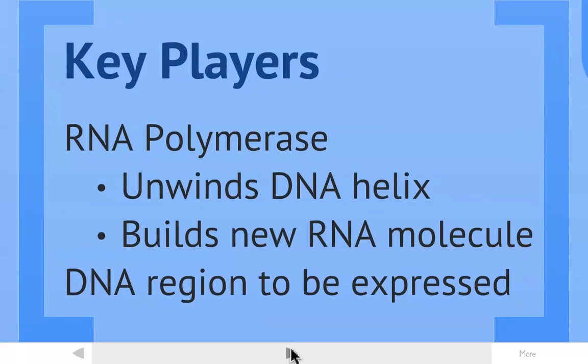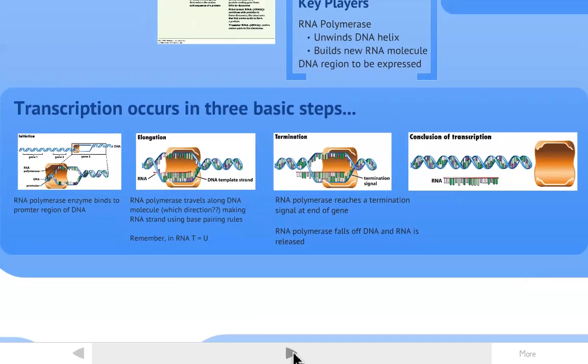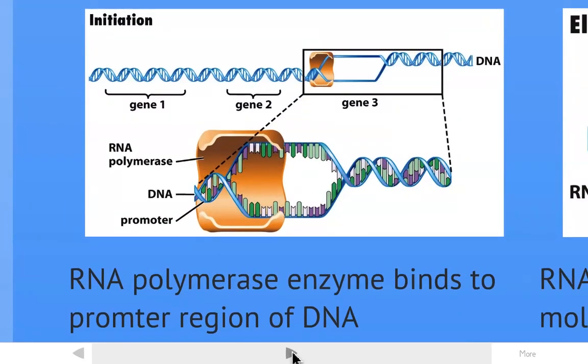So the key players in transcription. There's one enzyme called RNA polymerase that both unwinds the DNA helix and builds the new RNA molecule. RNA polymerase, one enzyme, does both of these jobs here. And you also need a piece of DNA to be expressed. There are three basic steps in transcription: initiation, elongation, and finally termination.